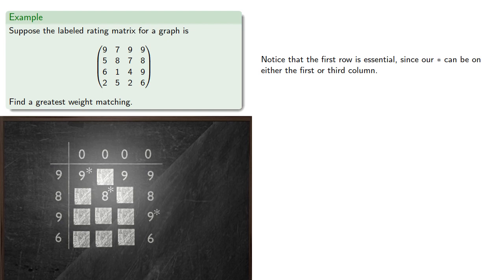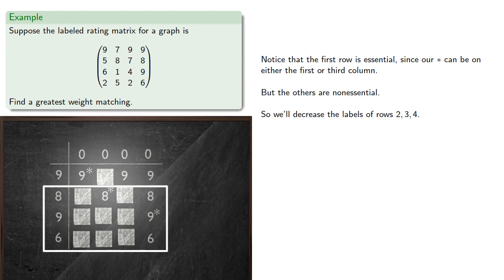Notice that the first row is essential, since our star can be on either the first or third column. But the others are non-essential, so we'll decrease the labels of rows 2, 3, and 4, and increase the labels of their corresponding assignments 2 and 4.